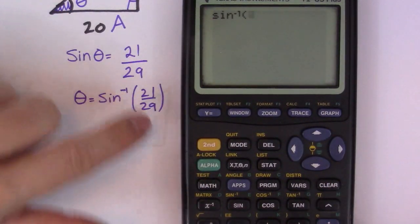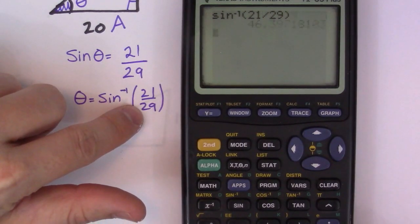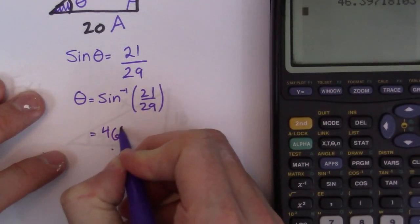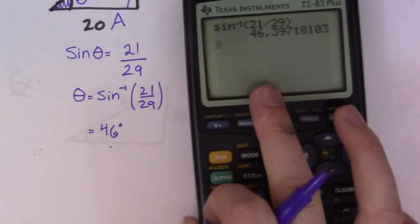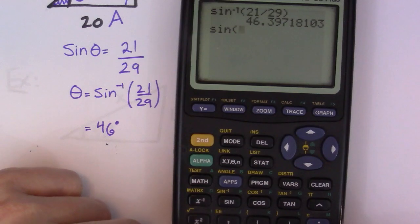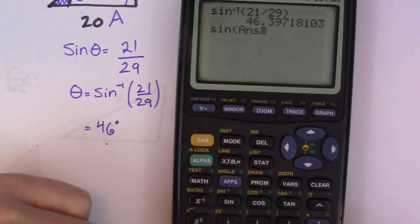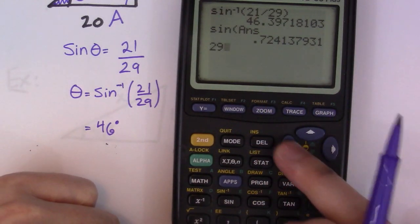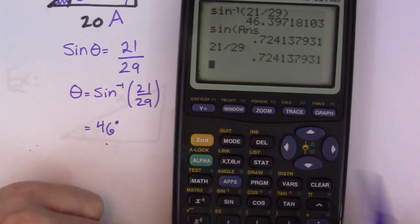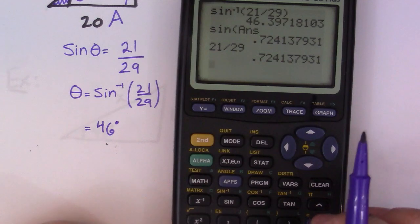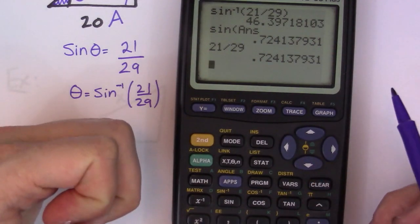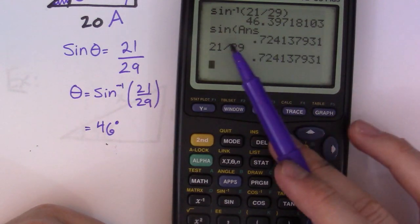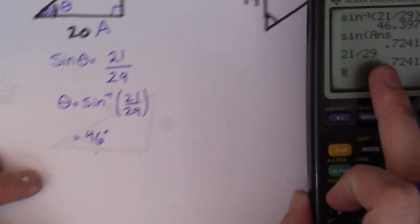So sine negative one of 21 over 29 gives back an angle of 46 degrees. You can verify this: if you take sine of 46, and also compute 21 divided by 29, you get the exact same answer. That's all the sine function is — sine of an angle is the ratio of the opposite side divided by the hypotenuse side. So sine of an angle gives you that ratio, and it's unique for a particular triangle with certain angles.